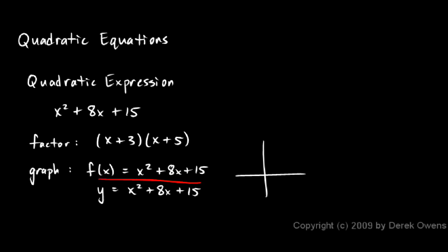These two statements mean the same thing. Y is just the y value or the height of the function. If we graph a quadratic function, we get a parabola.